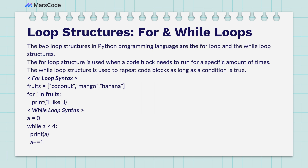Now we're looking at loop structures — the for loop and the while loop, the two different loop structures used in Python. The for loop is used when a code block needs to run for a specific number of times. The while loop repeats a code block as long as a condition is true, so it's used when you don't know in advance exactly how many times to repeat.